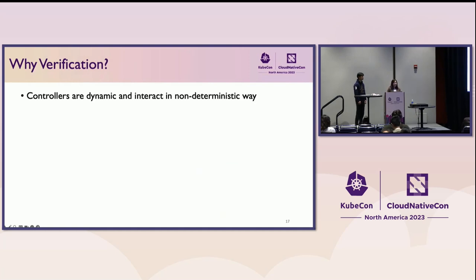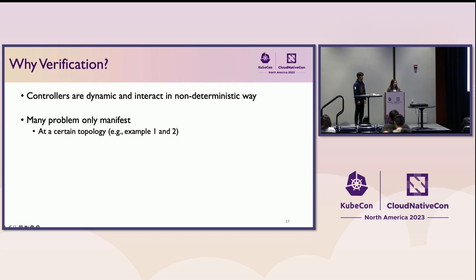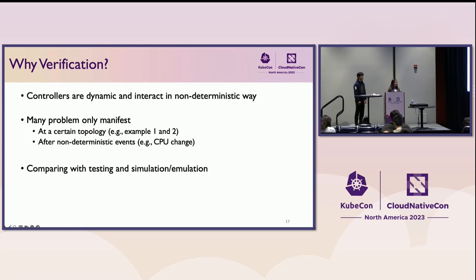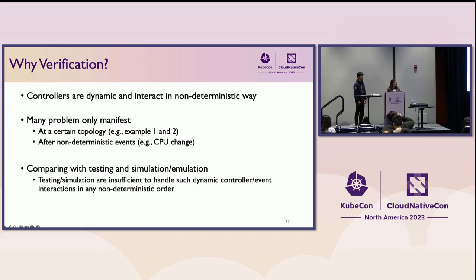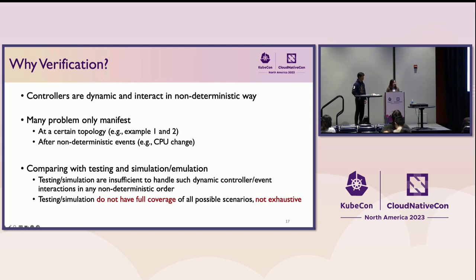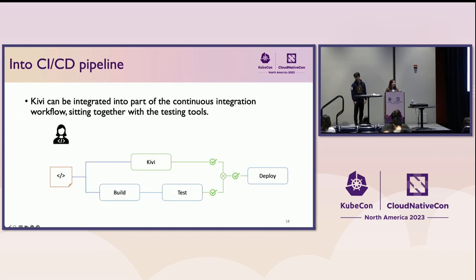Why do we need verification? The controllers are pretty dynamic and interact in a non-deterministic way, and many problems only manifest at certain topologies — only when the node group is not balanced across zones, and only after non-deterministic events like CPU changes. Compared with testing and simulation or emulation, these approaches are insufficient to handle such dynamic interactions in any non-deterministic order and do not have full coverage of all possible scenarios. Testing is mainly deployed for individual controllers rather than whole systems. We can also integrate Kiwi into the CI/CD pipeline alongside other testing tools as complementary approaches.